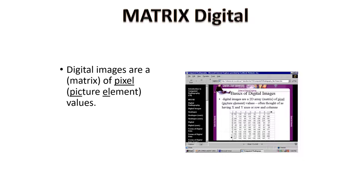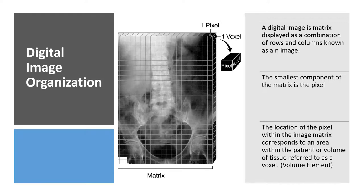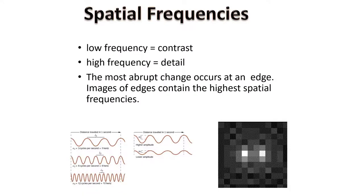Digital images are a matrix of pixel or picture element values. The digital image is a matrix displayed as a combination of rows and columns known as an image. The smallest component of the matrix is the pixel. The location of the pixel within the matrix corresponds to the area within the patient or volume of tissue referred to as a voxel or volume element.